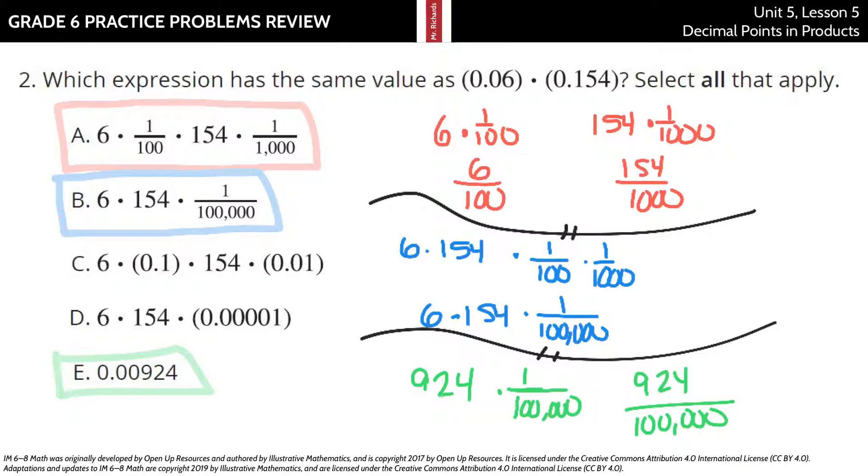And sure enough, if you look at our place value here, tenths, hundredths, thousandths, ten thousandths, hundred thousandths, nine hundred twenty-four hundred-thousandths.